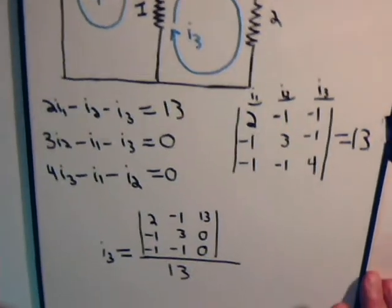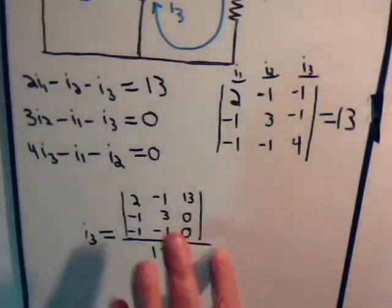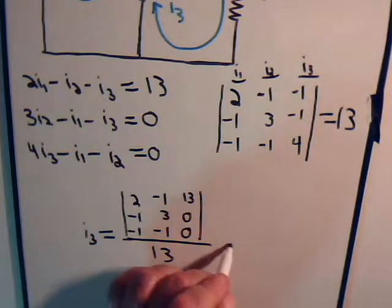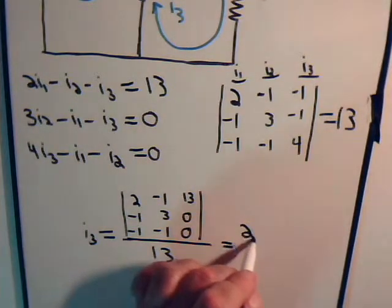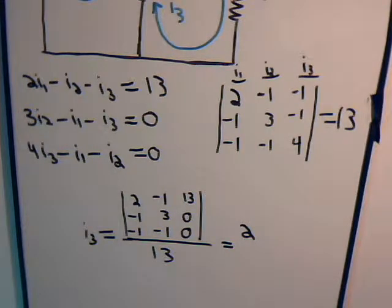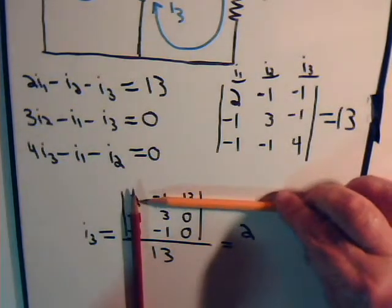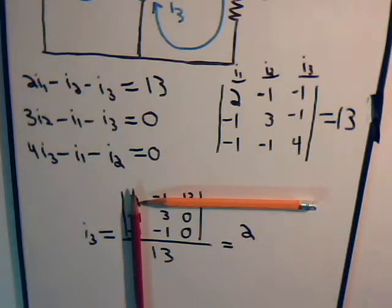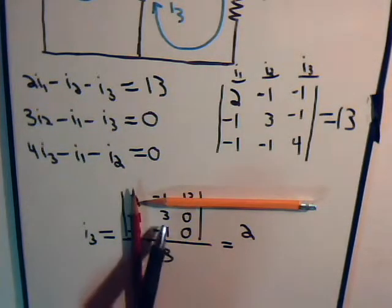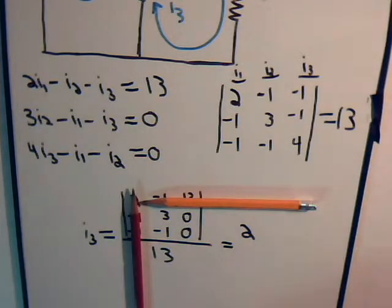Now we're going to expand this out using minors, so that would be equal to 2 times this 2 by 2 matrix that we get by covering the column and the row. Hopefully you can see it plainly. What we have looks like this - it's going to have a value of 0 because here we have 0 times 3 minus 0 times -1, so this is 0.